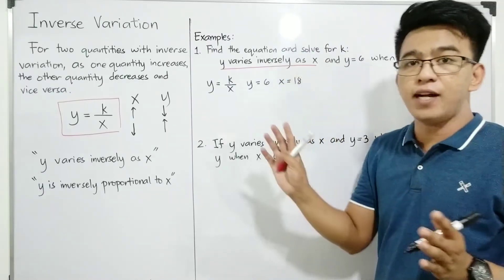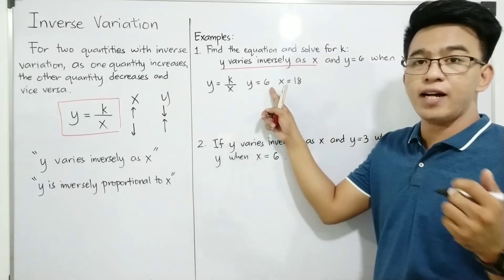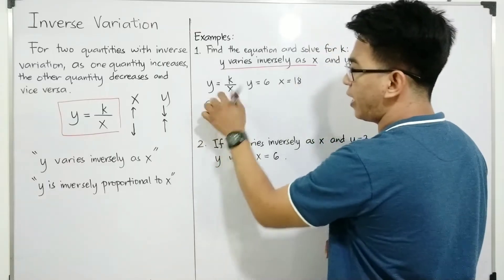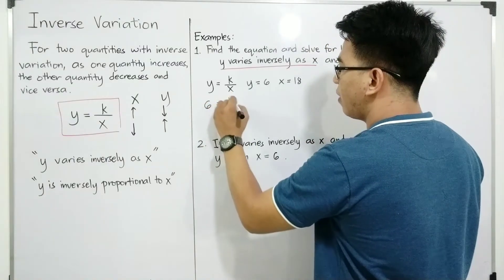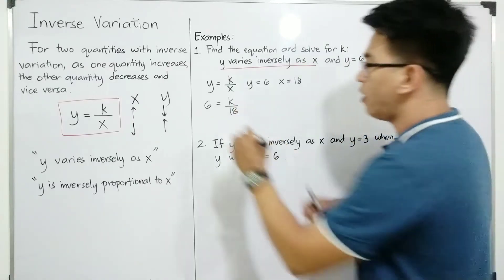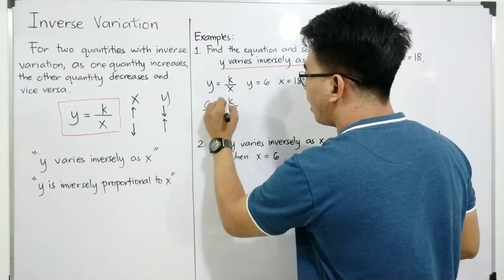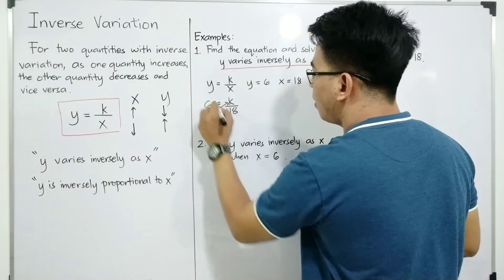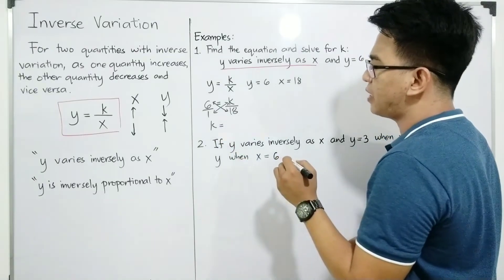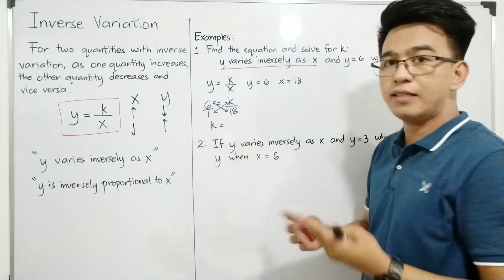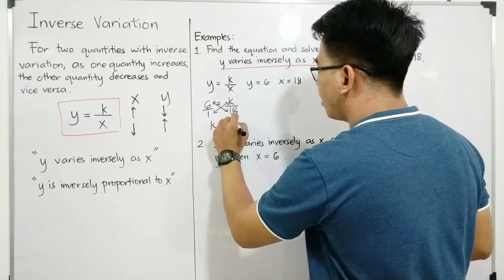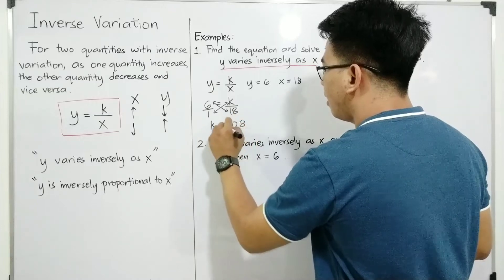To find the value of k, we will substitute the value of y and x into this equation. We have 6 to replace y: 6 is equal to k over 18. Now, to find the value of k, we will cross multiply. 1 times k is k, and 6 times 18 — 6 times 10 is 60, plus 6 times 8 is 48 — therefore k is 108.